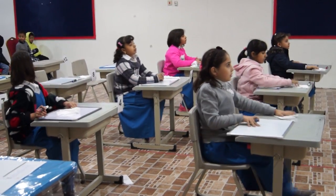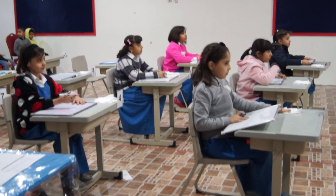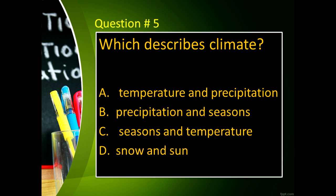Question number five: Which describes climate? Letter A, temperature and precipitation. Letter B, precipitation and seasons. Letter C, seasons and temperature. And letter D, snow and sun.